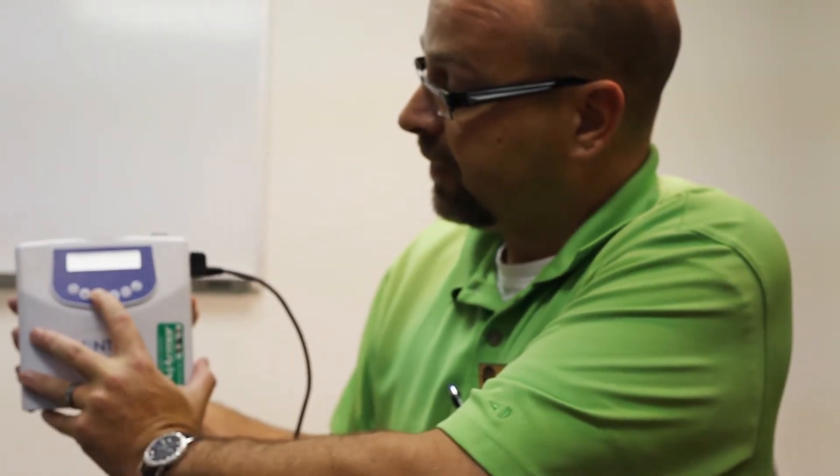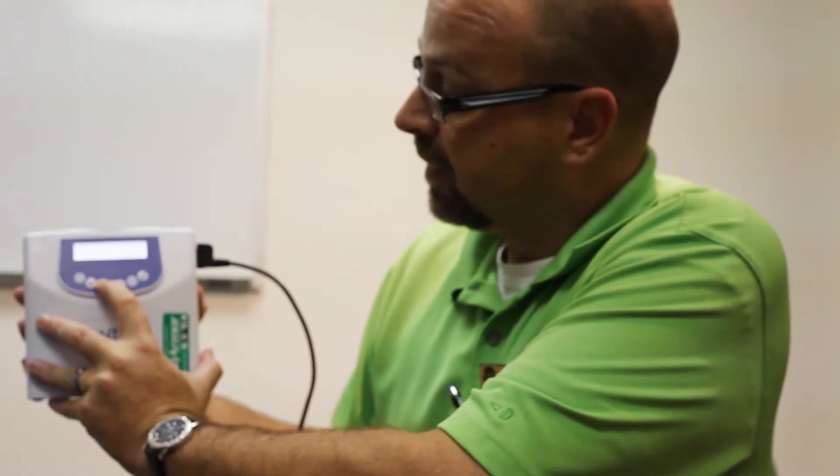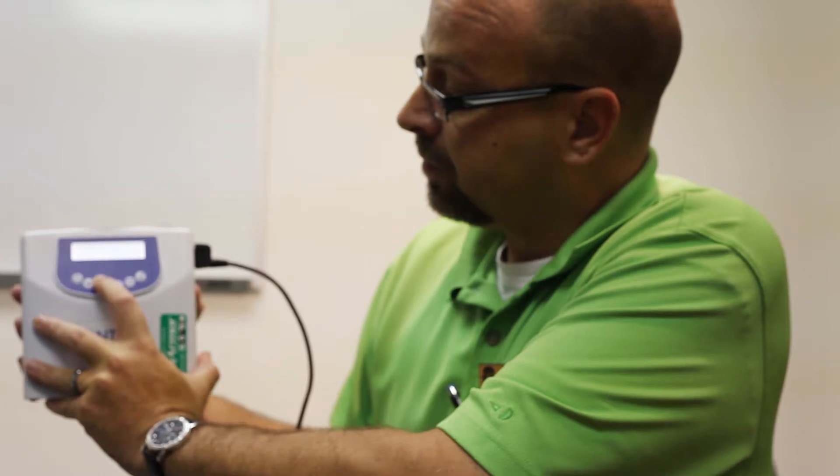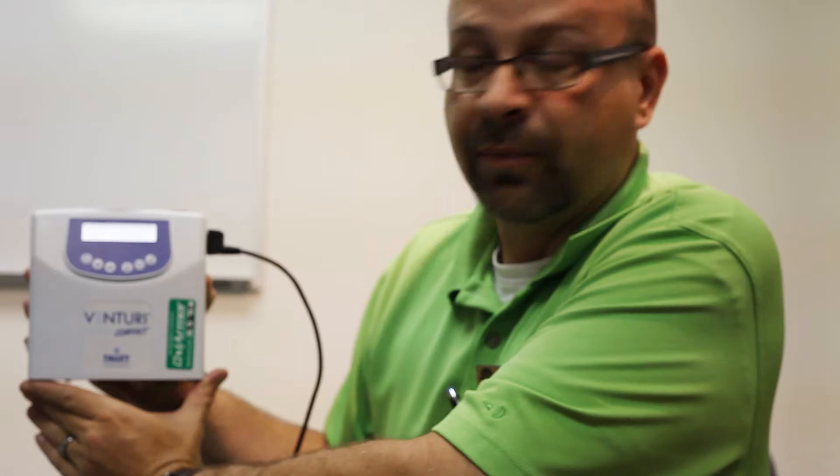To change it, simply hit the up or down button, and you can modify your settings in increments of 5. I'm going to go ahead and put it on 125 millimeters of mercury.